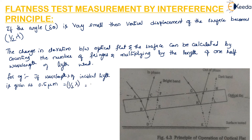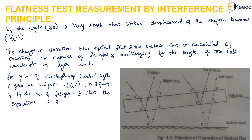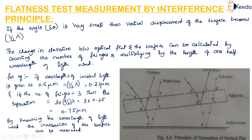If the number of fringes is equal to 3, then the separation can be calculated as 3 times half the wavelength — that is 3 × 0.25 = 0.75 micrometers. By knowing the wavelength of the light used, the inaccuracies in the surface can be measured. This is all about the flatness test measurement by interference principle using an optical flat.